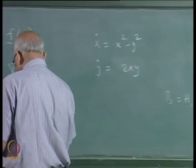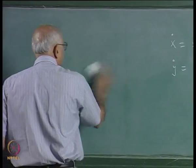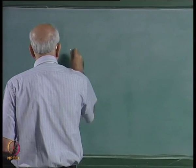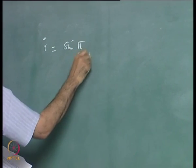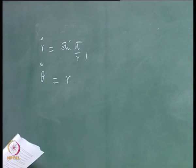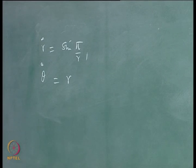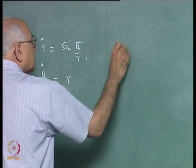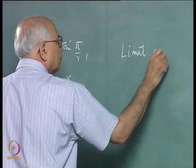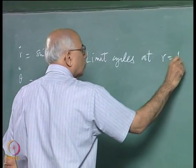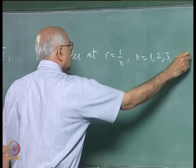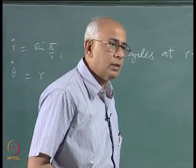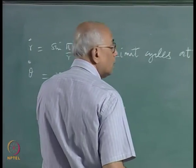Question 2 was fairly straightforward. The system in polar coordinates: ṙ = sin(π/r), θ̇ = r. Limit cycles occur where ṙ = 0, i.e., at r = 1/n for n = 1, 2, 3, … giving a family of concentric circular limit cycles of radii 1, 1/2, 1/3, and so on.